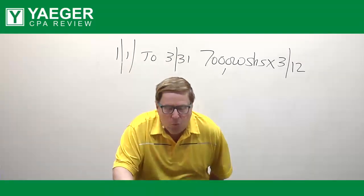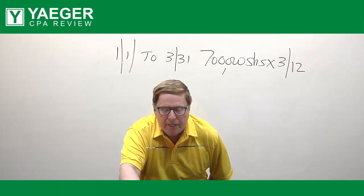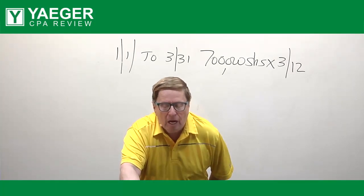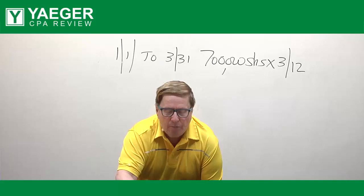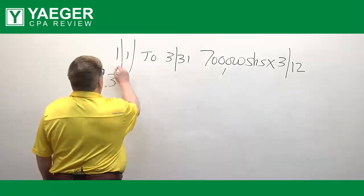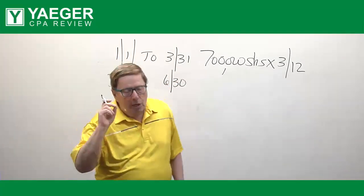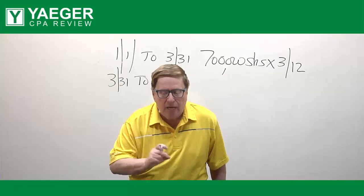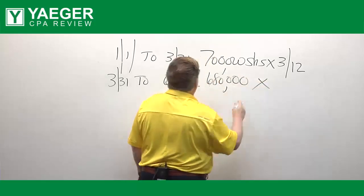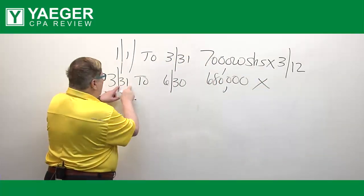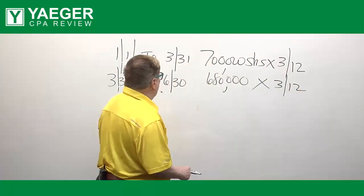Then we add another situation which says on 3-31 we repurchased 20,000 shares. Now 20,000 shares we've repurchased went until the next date, 6-30. So from 3-31 to 6-30 we repurchased 20,000 shares. So now we had 680,000 shares for how many months? Well let's see, April, May, June. So for three months out of 12 we now had 680,000 shares.